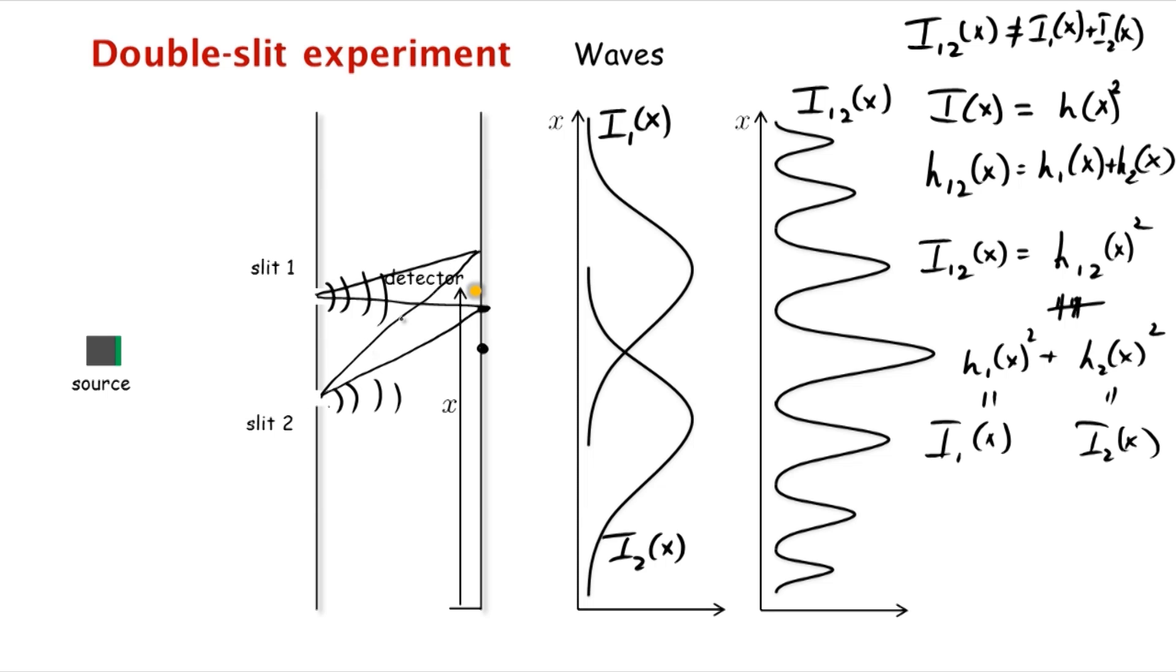Then by the time the fifth crest arrives from slit two, the sixth crest from slit one has already arrived. And so you again get constructive interference. So you get this kind of constructive, destructive, constructive interference, and so on, giving you this interference pattern.